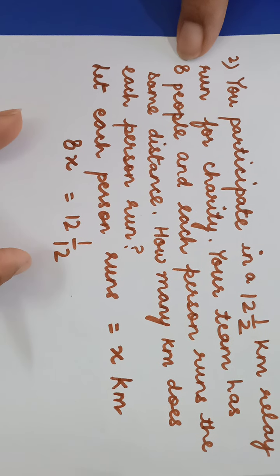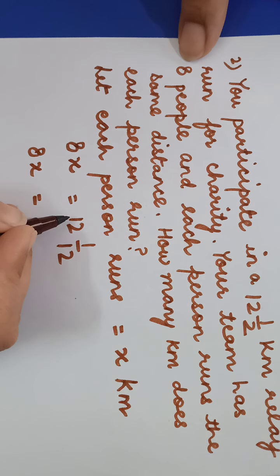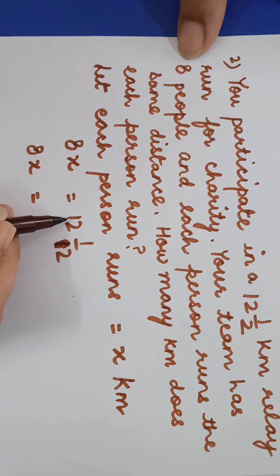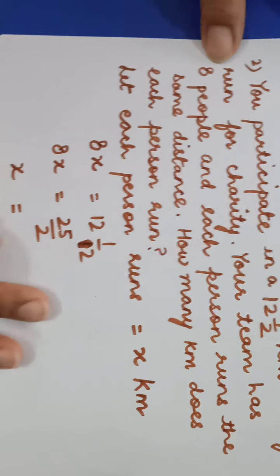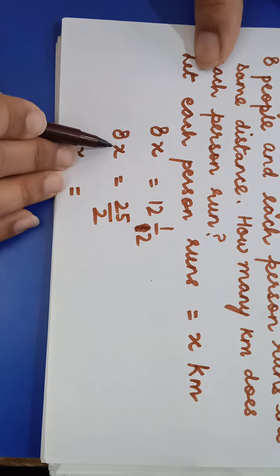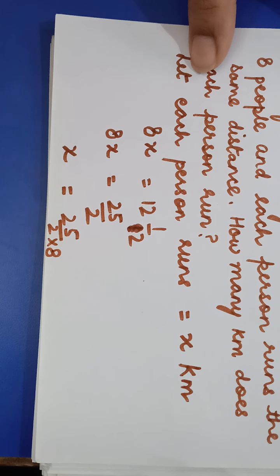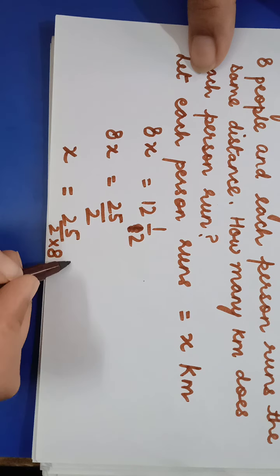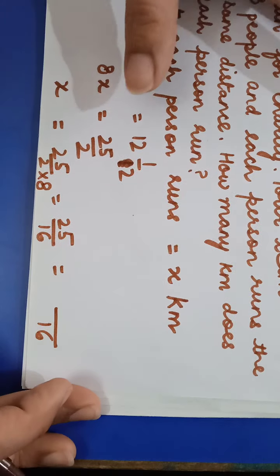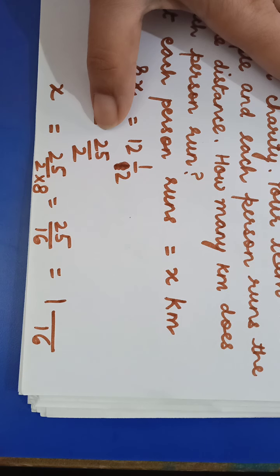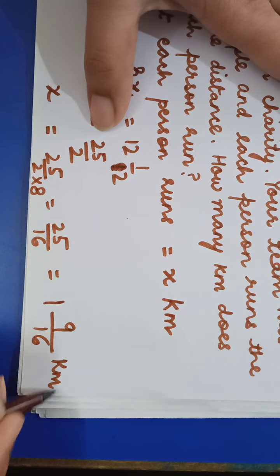Converting 12½ to an improper fraction: 12 times 2 is 24, plus 1 gives 25 upon 2. So x equals 25 upon 2 divided by 8, which is 25 upon 16. Converting to a mixed fraction: 16 ones are 16, remainder 9, giving 1 and 9 upon 16 kilometers as the answer.